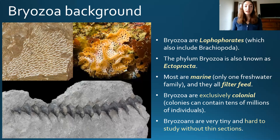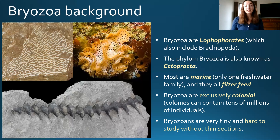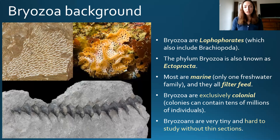Imagine all of the cells in our body being different individuals — that would be kind of like a bryozoan. Bryozoan colonies can contain tens of millions of individuals making up one animal. Because bryozoan individuals are so tiny, these colonial structures are hard to study and distinguish without thin sections. We can see examples like the fan-like fossil on the top left, the screw-like Archimedes genus on the bottom, and a live modern bryozoan on the top right.